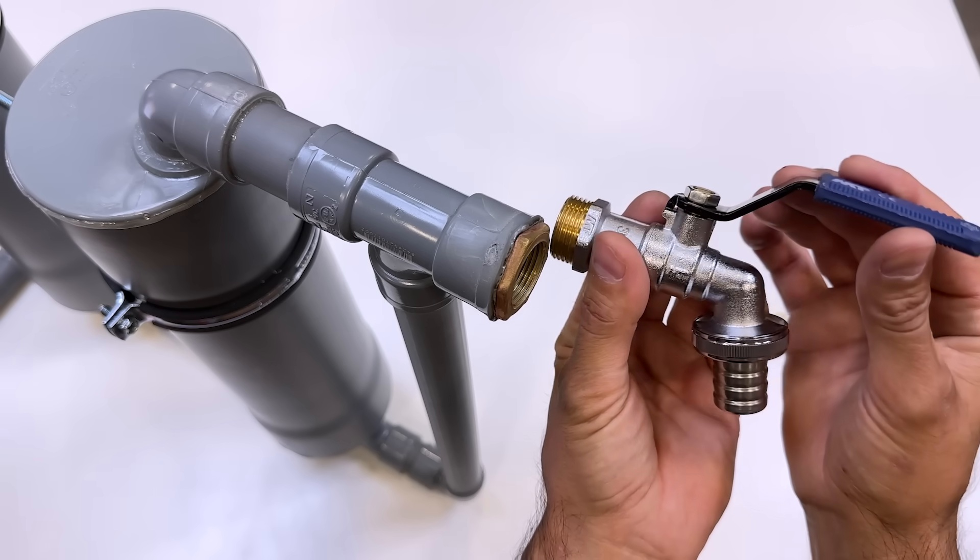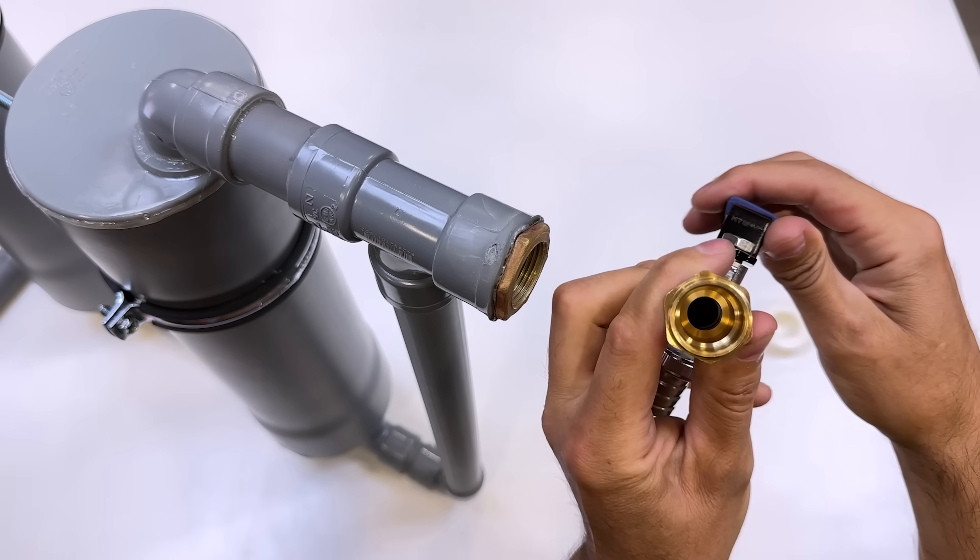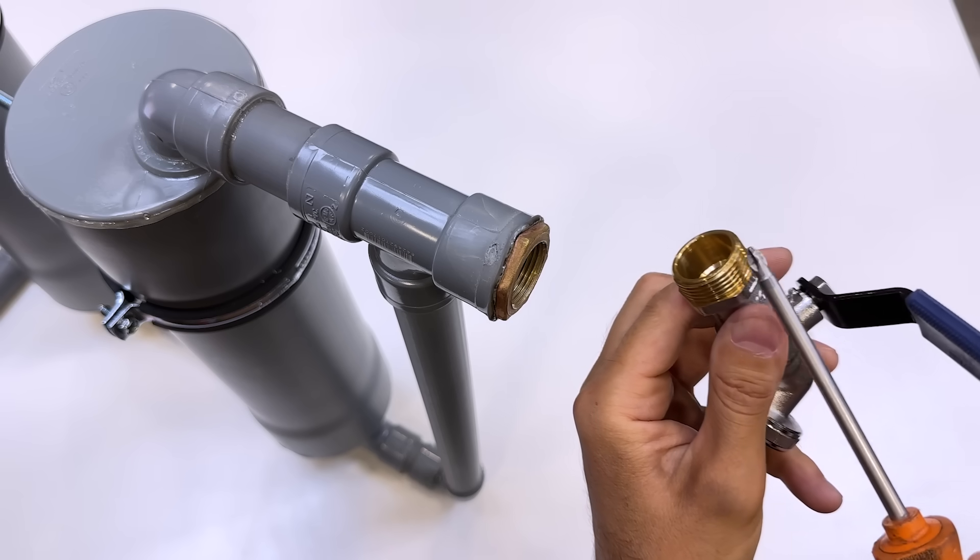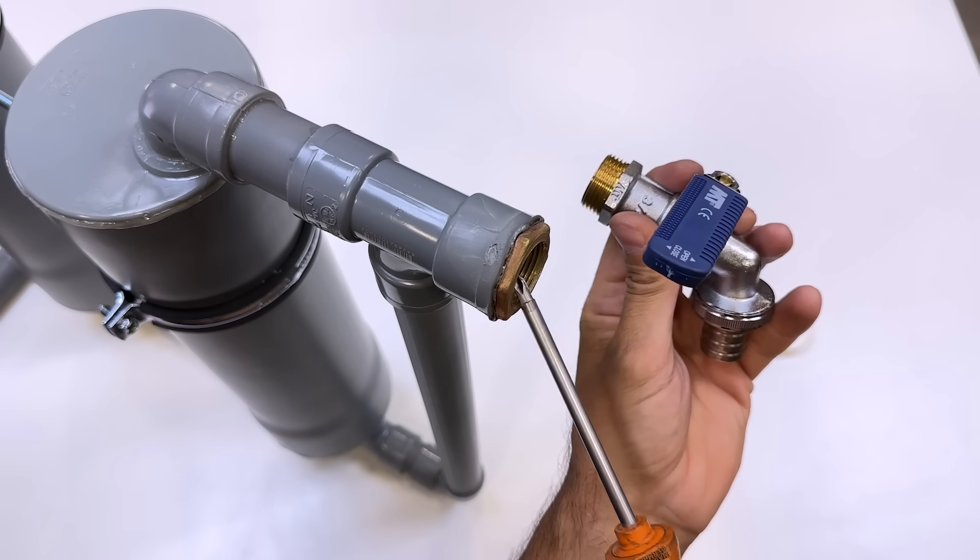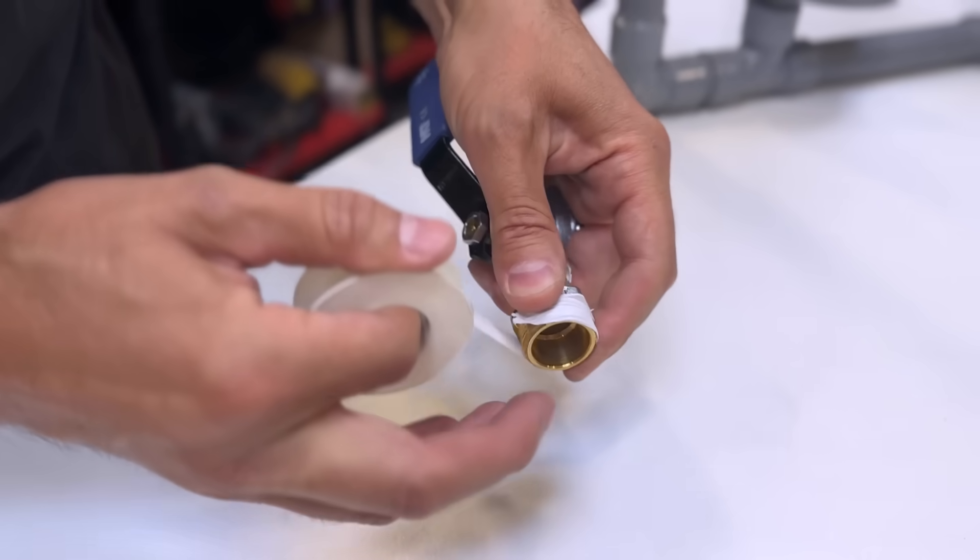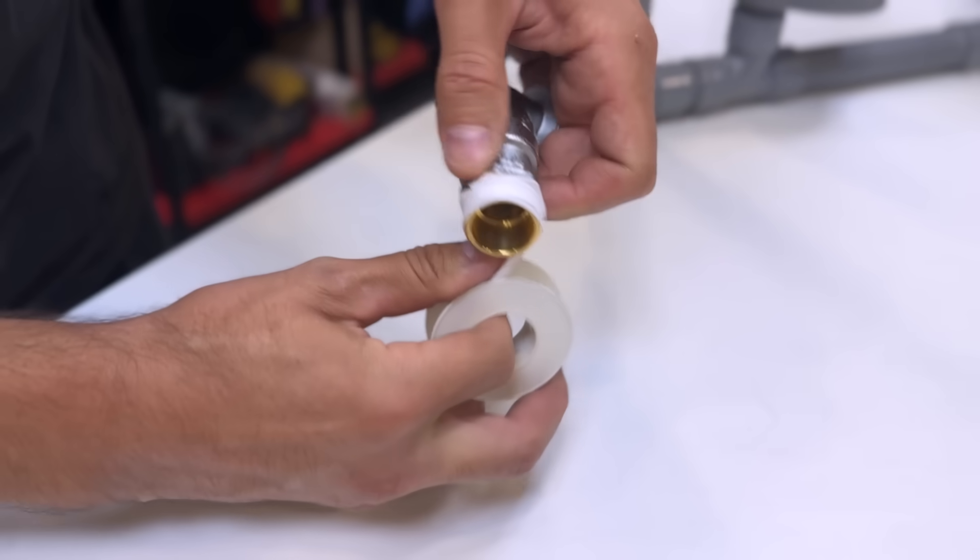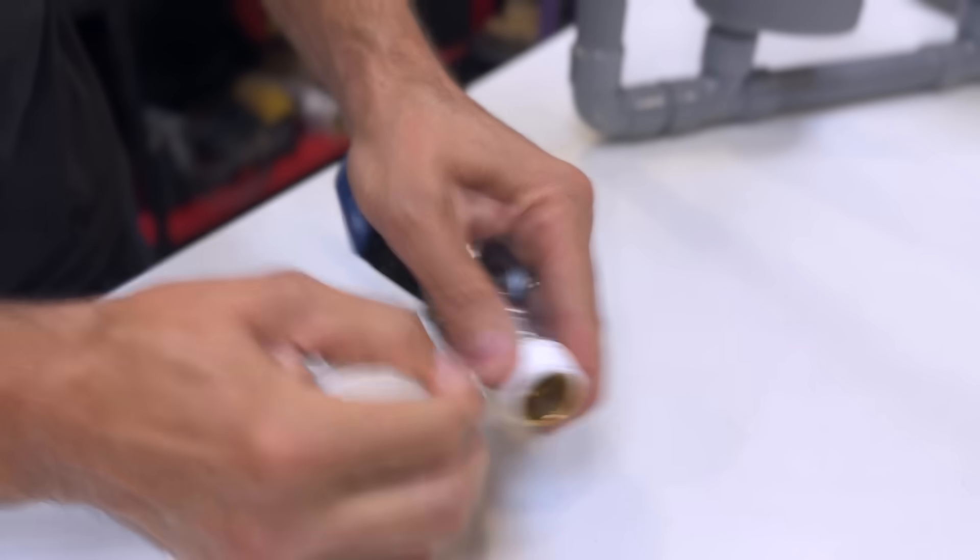Now we must screw on the faucet. But first we will apply Teflon on the thread to prevent pressure leaks.